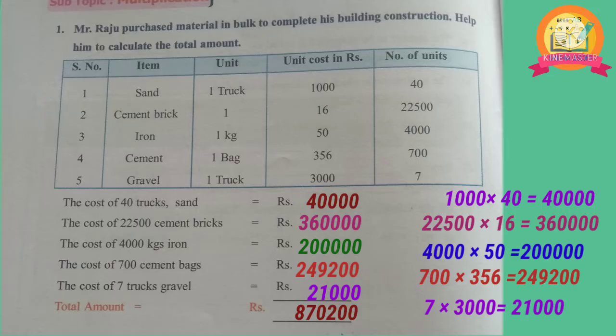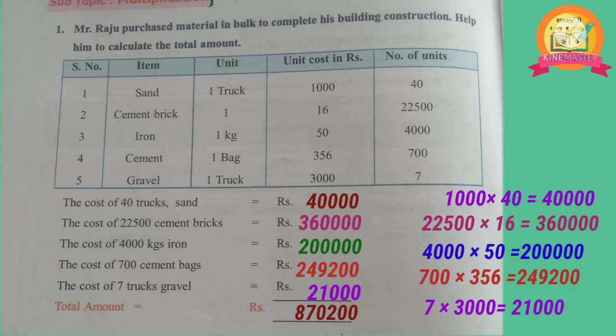The cost of 7 trucks of gravel: multiply 7 with the cost of 1 truck gravel, which is 3,000. That means 7 multiplied with 3,000, we get 21,000. Therefore, total amount: add all the amounts calculated for each material. After adding, we get 8,70,200. Therefore, total amount is equal to Rs. 8,70,200.